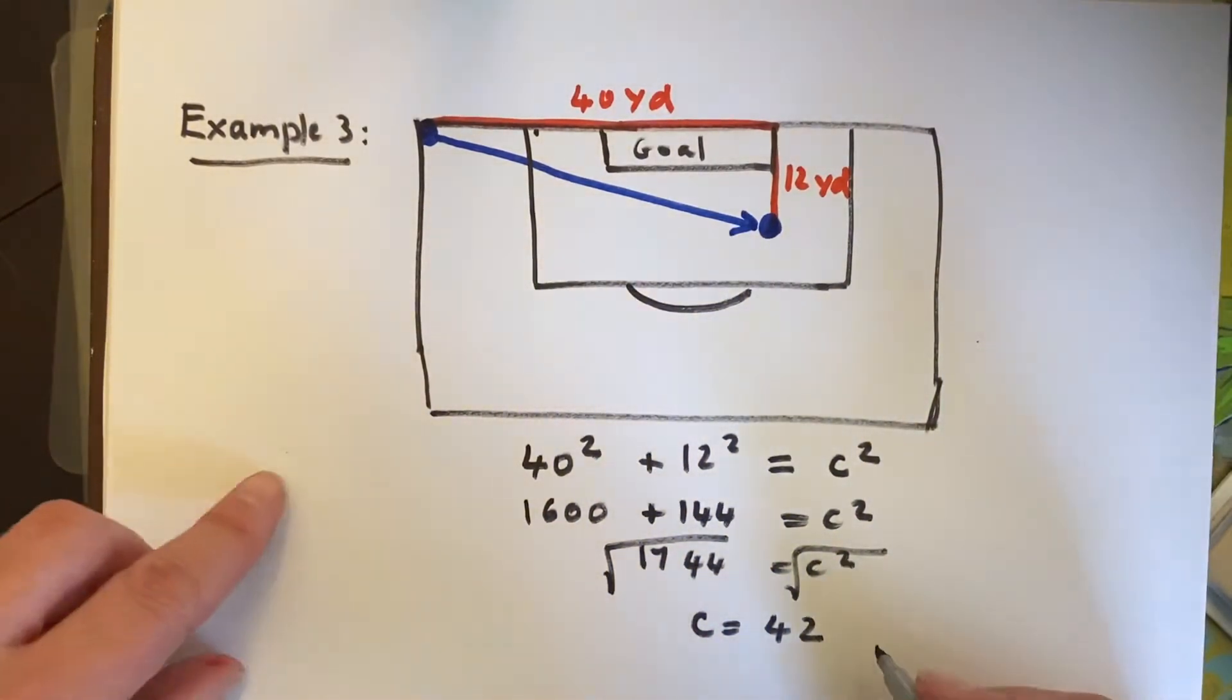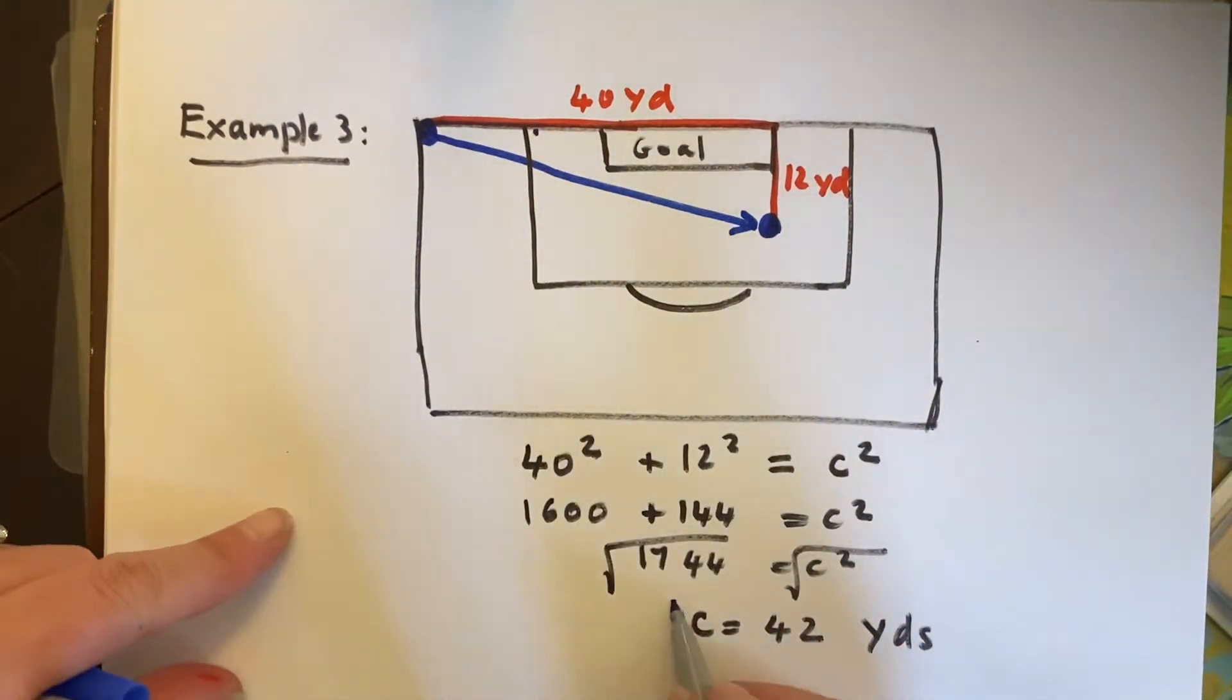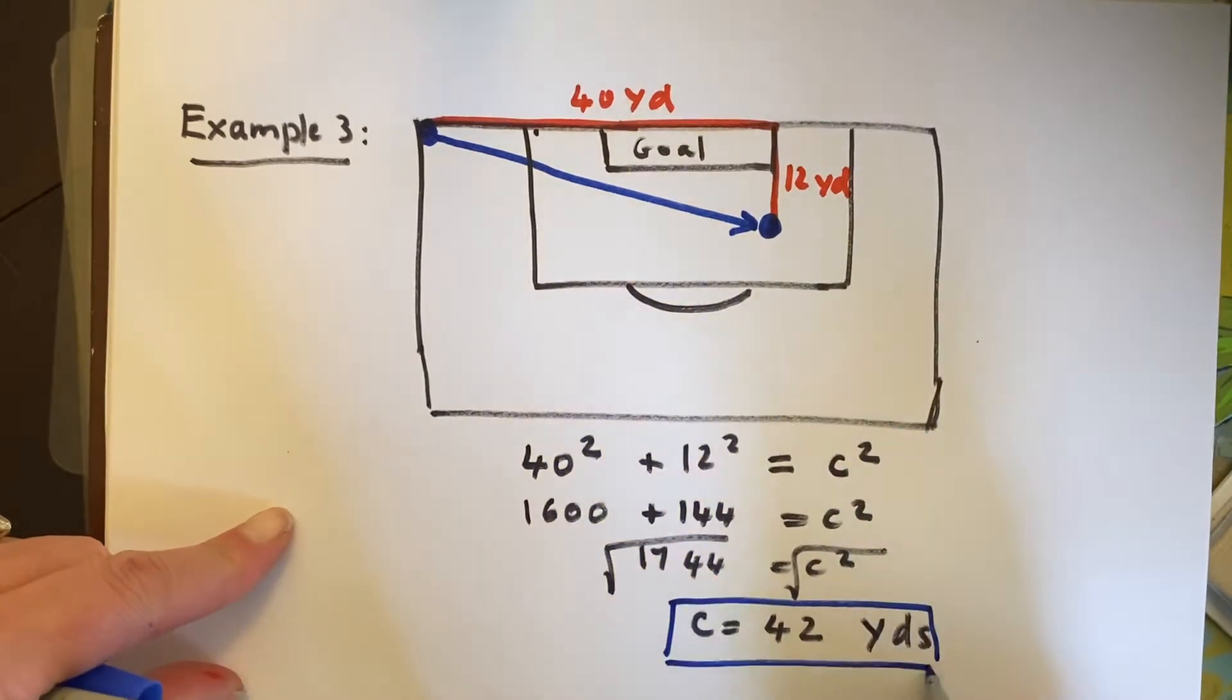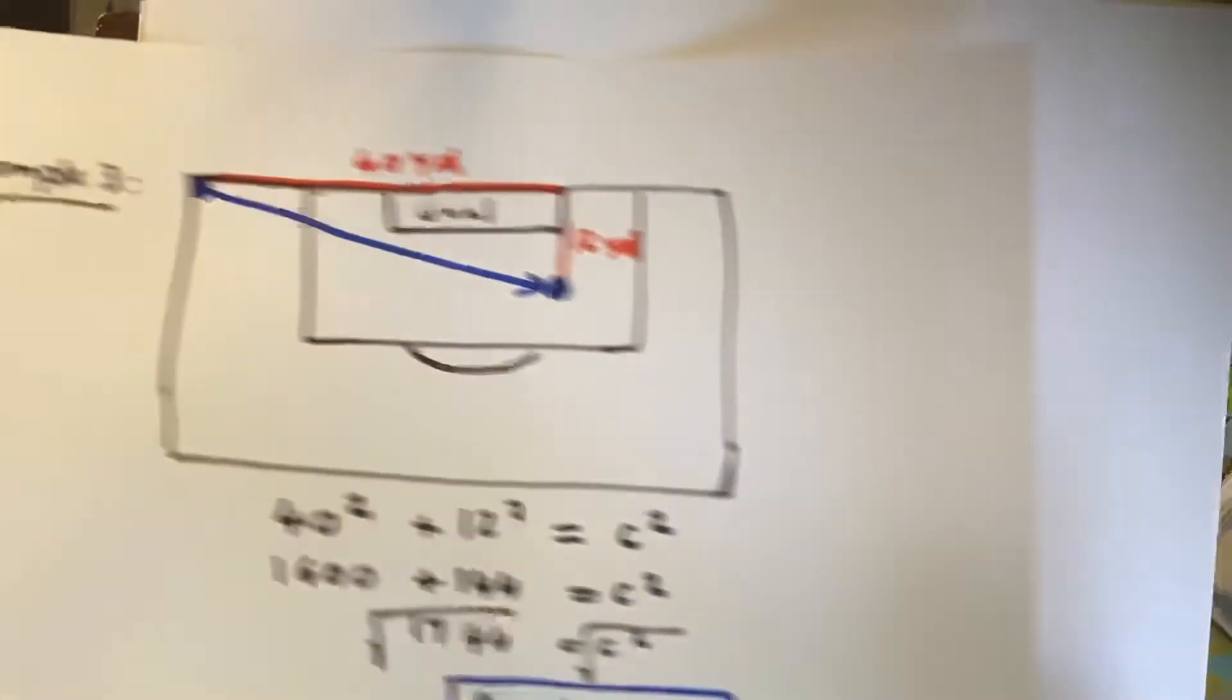And so my answer is going to be that ball was kicked 42 yards to reach the other player for it to go within the goal. The very last part of this lesson is finally how do you know if you have a right triangle? And that's going to be examples 4 and 5.